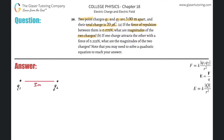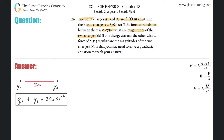We know that the total charge, in other words Q1 plus Q2, equals 20 micro coulombs. Converting to coulombs, that's 20 times 10 to the minus 6. We also know the forces are repulsive, which means the charges are either both positive or both negative — it doesn't really matter, just know that they're going to be the same sign.